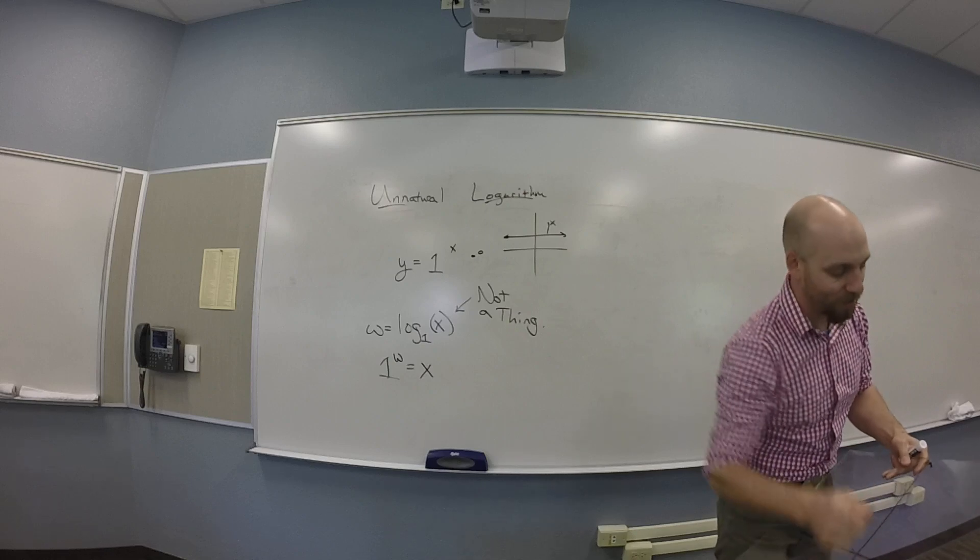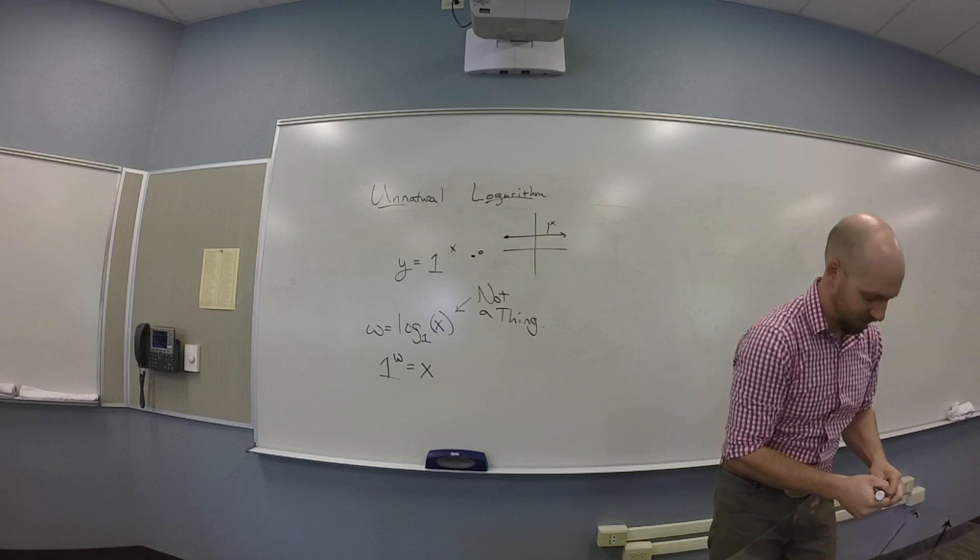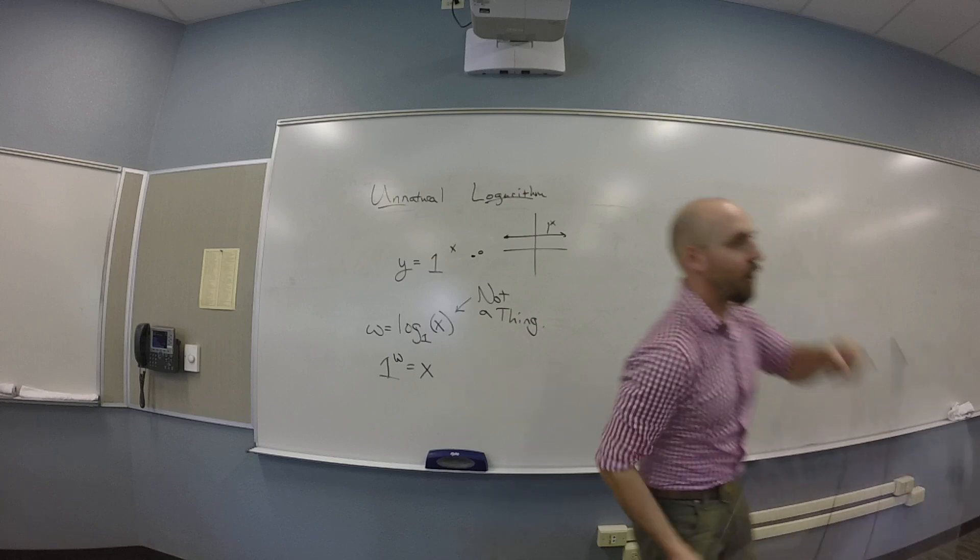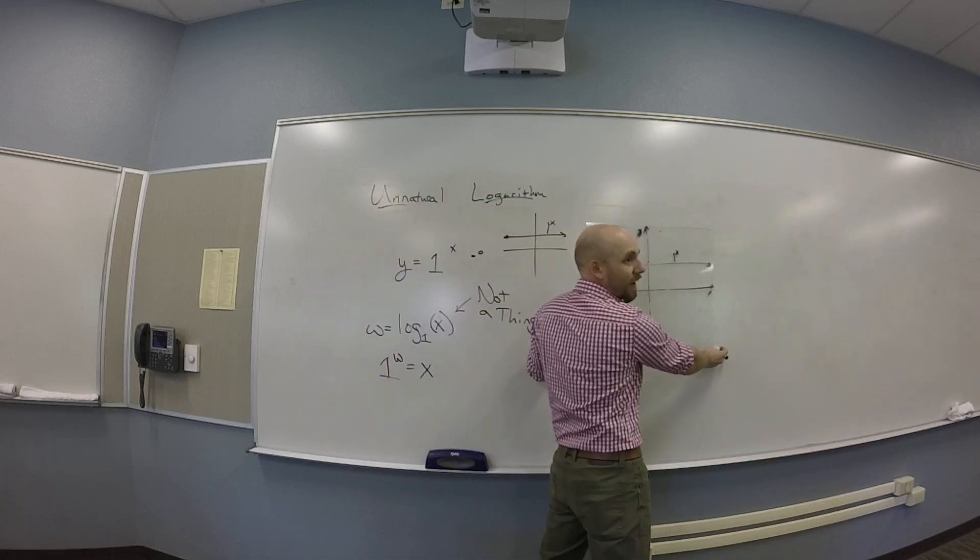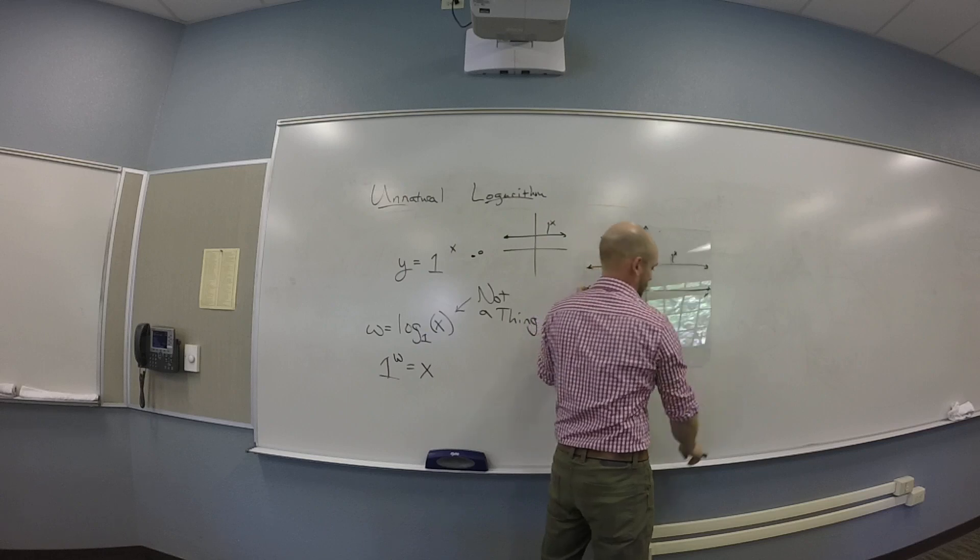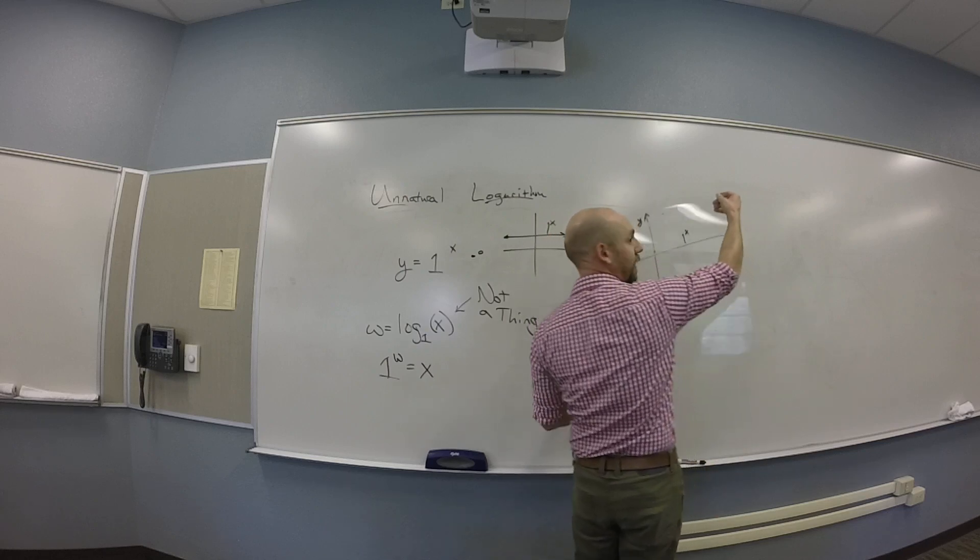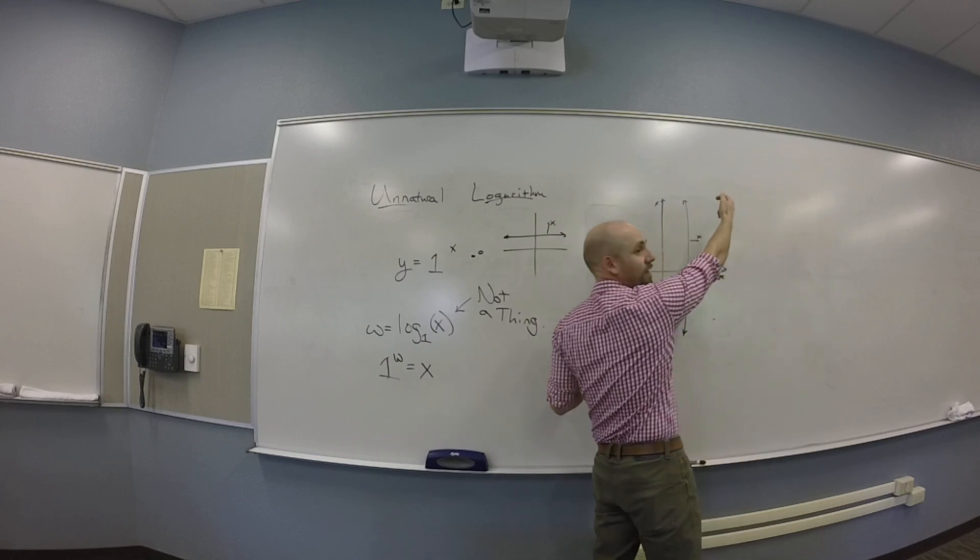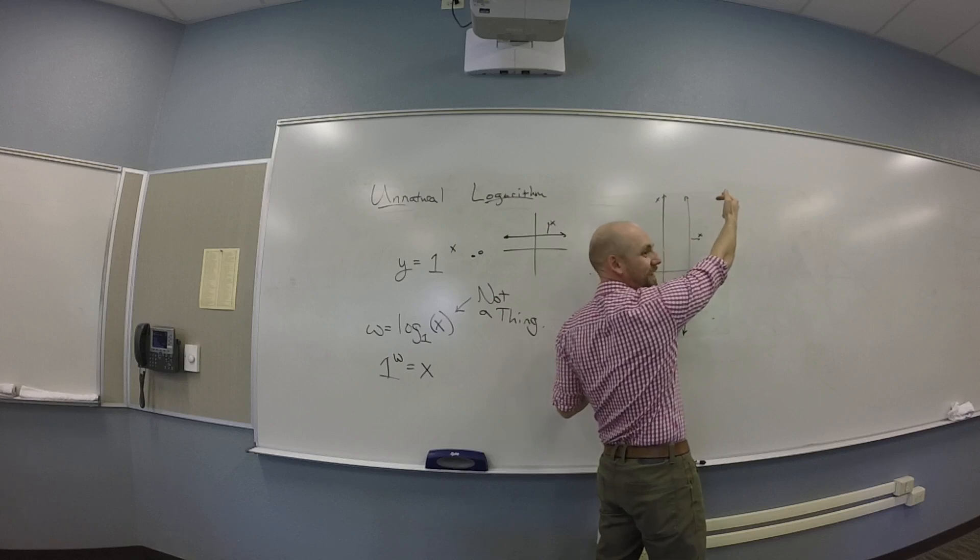So if you took your 1 to the x function - to get the inverse, I should flip it, right? And my horizontal line becomes a vertical line, and now it miserably fails the vertical line test.